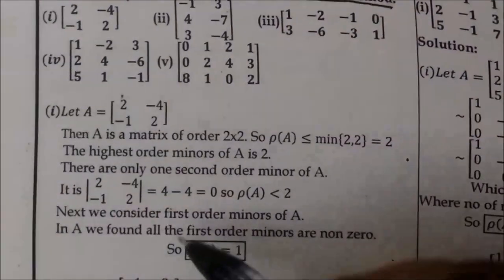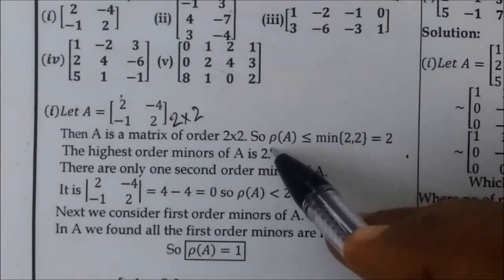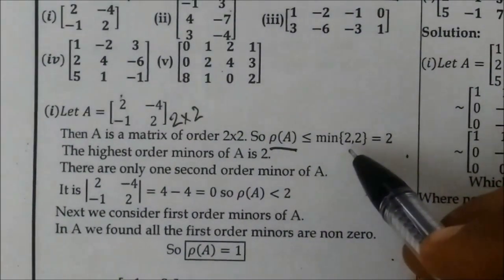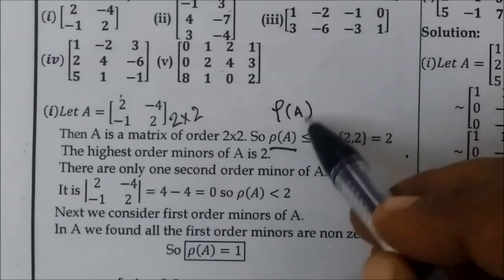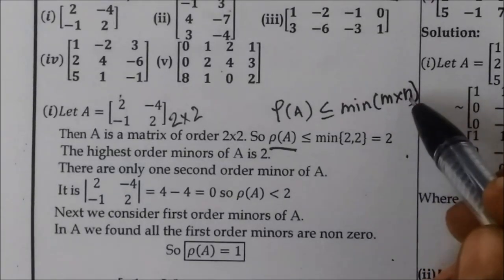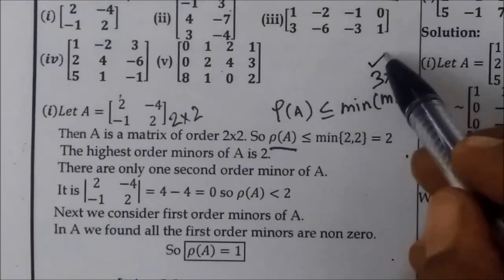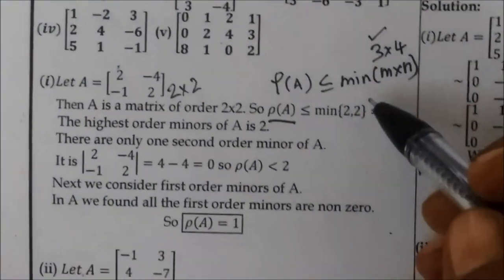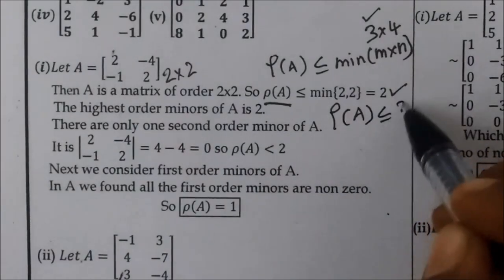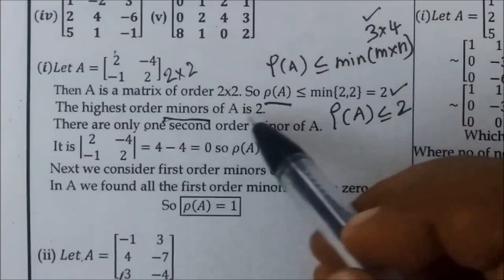So the question is: A is a matrix of order 2 by 2. What is the order? 2 by 2. The rank of A is less than or equal to the minimum of m and n. So rho of A is less than or equal to minimum of 2, 2. This is the highest order minor — 2 by 2, so 2 is the highest order.